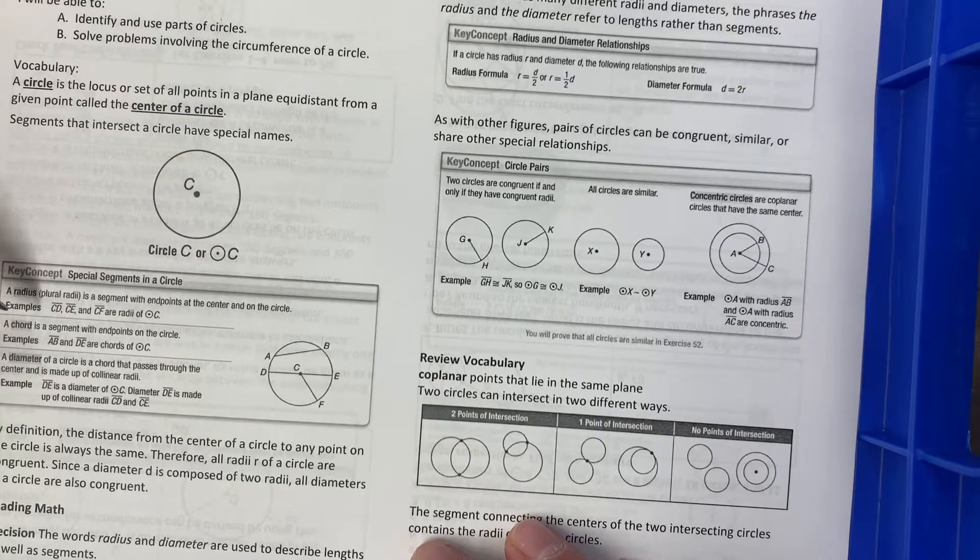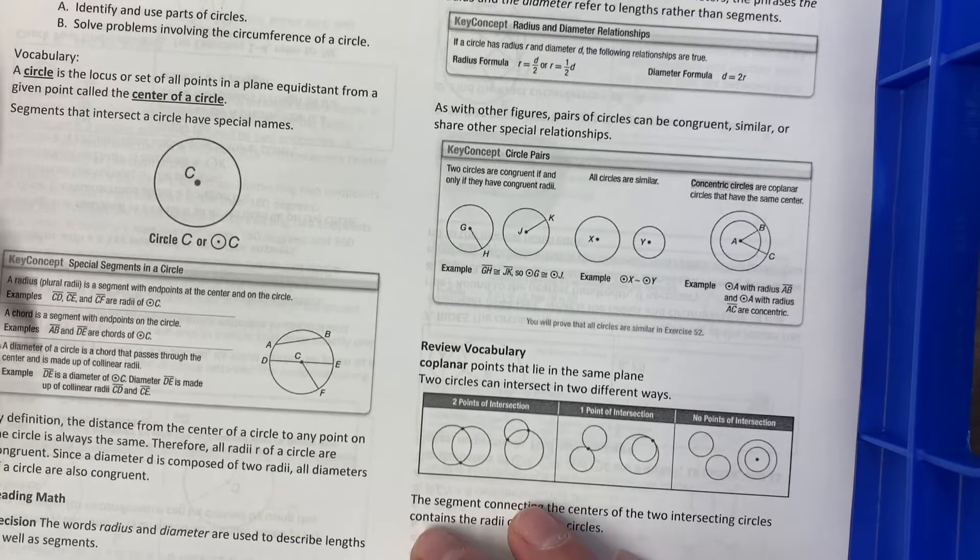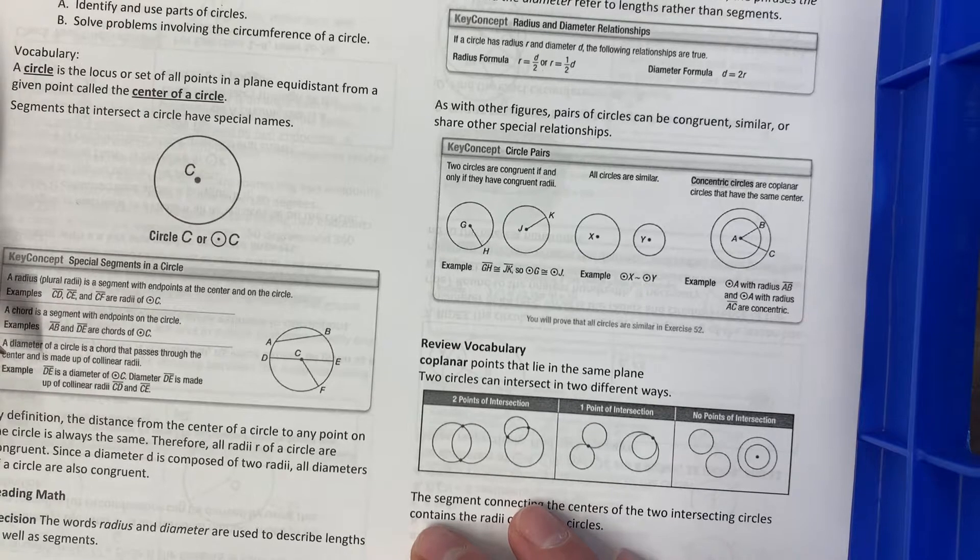A chord is a segment with endpoints on the circle, so AB and DE are chords. A diameter of a circle is a chord that passes through the center and is made up of collinear radii. DE is a diameter of circle C. Diameter DE is made up of collinear radii CD and CE.